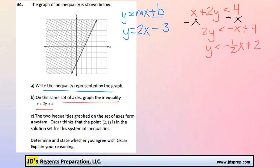So now we just need to graph this. We know our slope is negative 1 half, and our y-intercept is 2. So let's start by plotting that point. 0, 2 is right here, so here's our y-intercept.